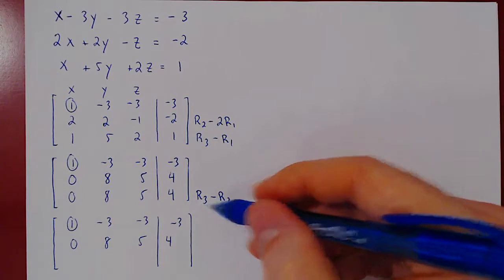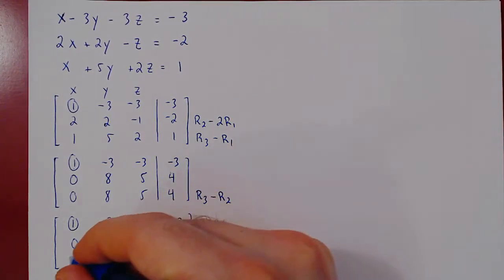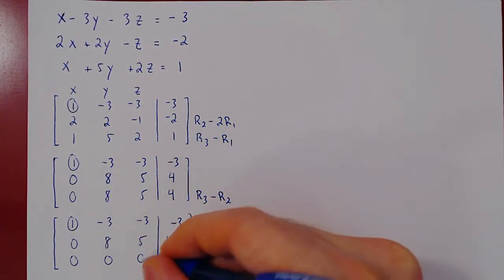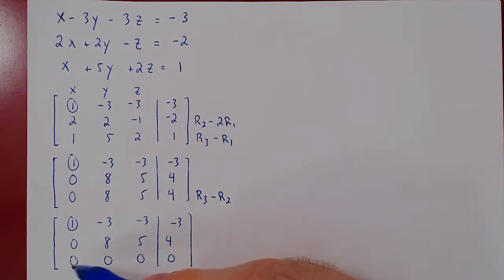And of course, if we do row 3 minus row 2, as they are the same rows, we will get a row of zeros, which is OK. It's just a vacuous row. All it says is 0 is equal to 0, which is always true.